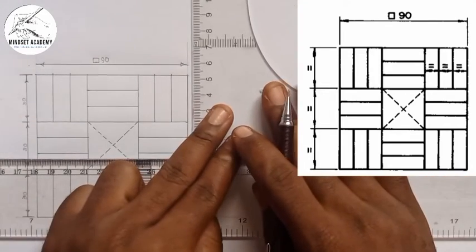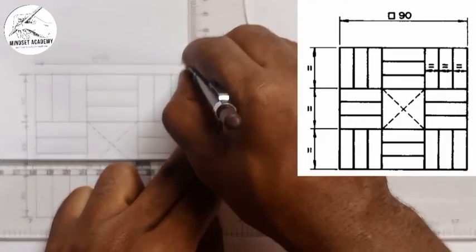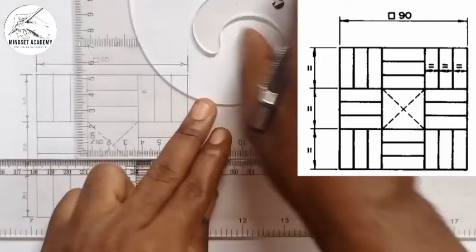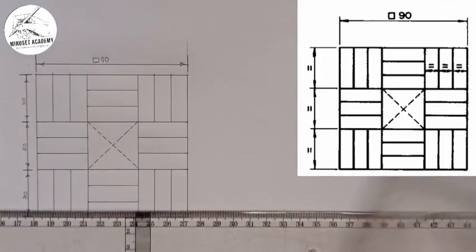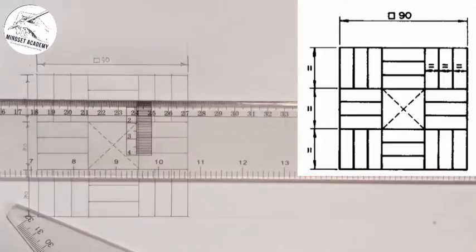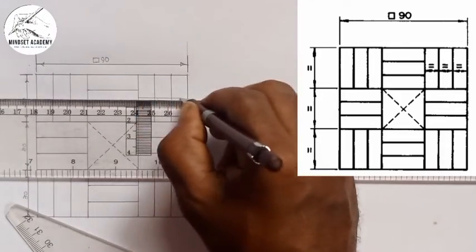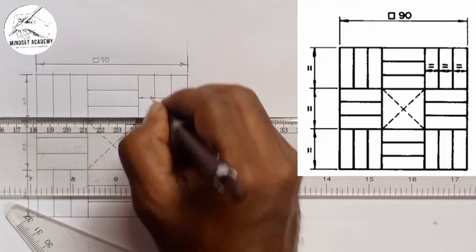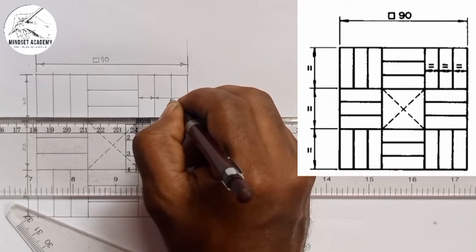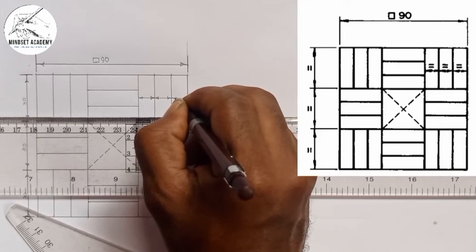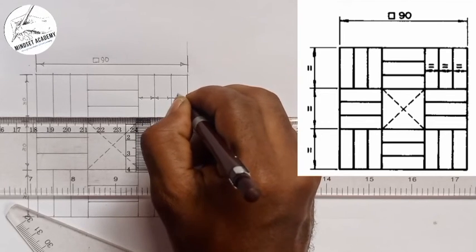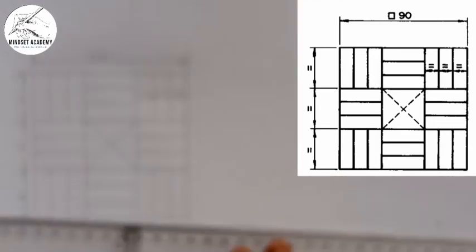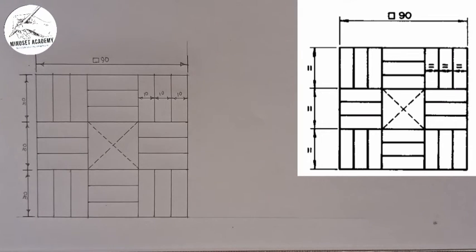Taking this end here — the next dimension is in between, so I'll draw this line with a smaller arrow here. This is 10, this is 10, and this is 10 — which gives us 30. So we have successfully reproduced the figure shown on the right hand side.